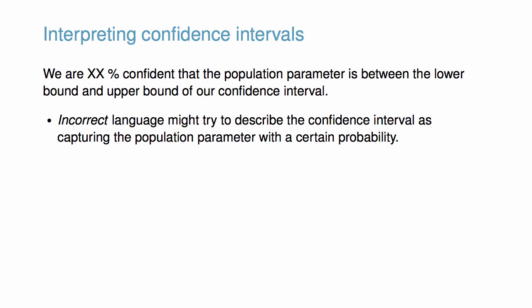Incorrect language might try to describe the confidence interval as capturing the population parameter with a certain probability. This is one of the most common errors. While it might be useful to think of it as a probability, the confidence level only quantifies how plausible it is that the parameter value is in the interval.